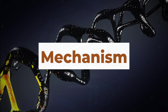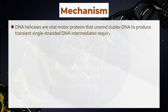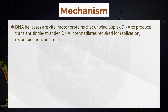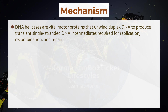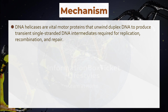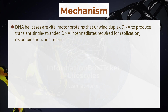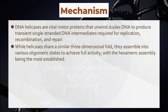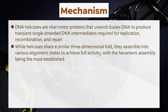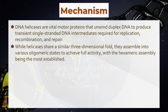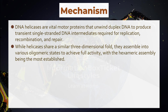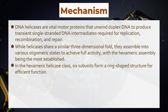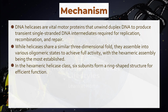Mechanism of DNA Helicases: DNA helicases are vital motor proteins that unwind duplex DNA to produce transient single-stranded DNA intermediates required for replication, recombination, and repair. While helicases share a similar three-dimensional fold, they assemble into various oligomeric states to achieve full activity, with the hexameric assembly being the most established. In the hexameric helicase class, six subunits form a ring-shaped structure for efficient function.